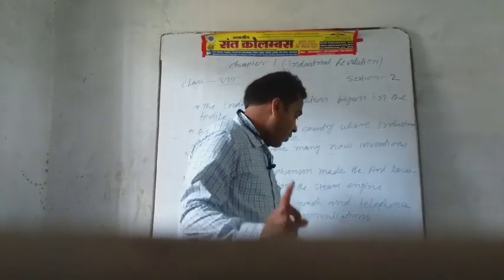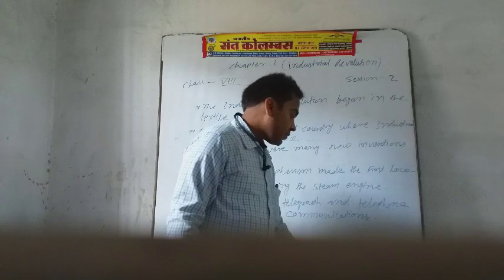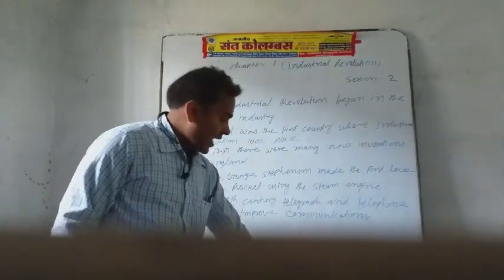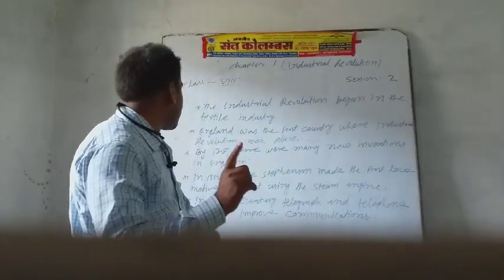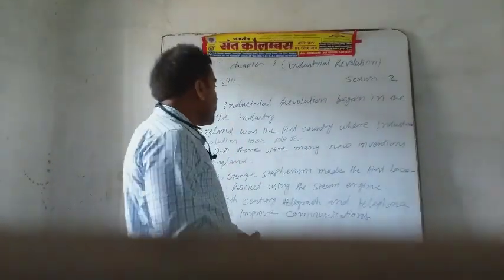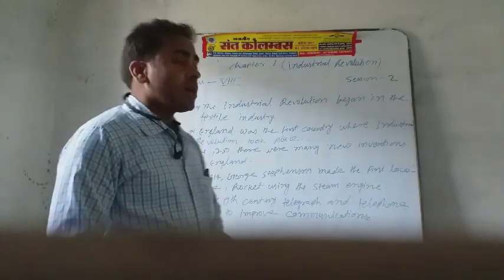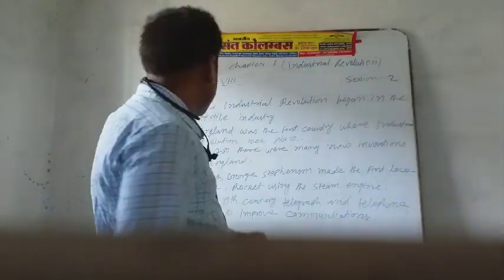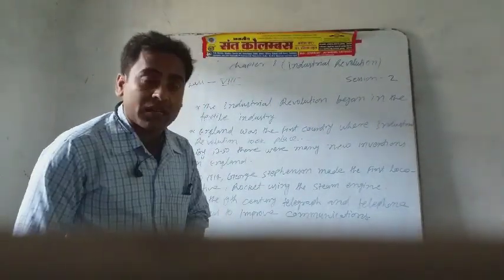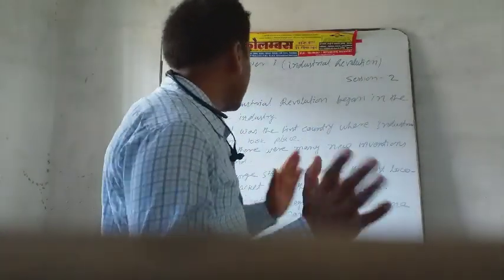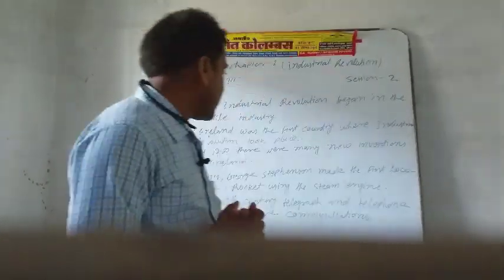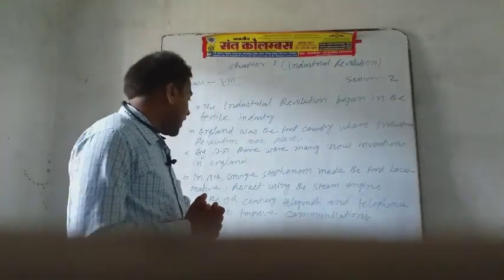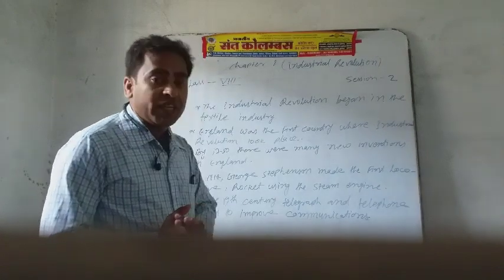England was the first country where the industrial revolution took place, and by the 1850s there were many new inventions in England. In 1840, George Stephenson made the first locomotive rocket using a steam engine, and in the 19th century, the telegraph and telephone improved communications.